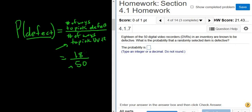Again, the probability of a defect is the number of ways to pick a defect - 18 defects, 18 ways to pick a defect - over the number of ways to pick a DVR. 50 DVRs, 50 ways to pick a DVR.